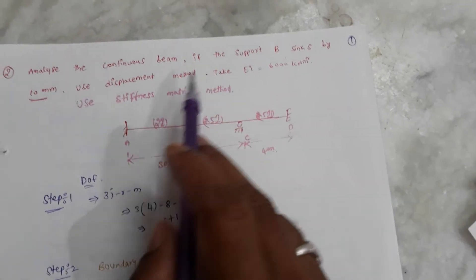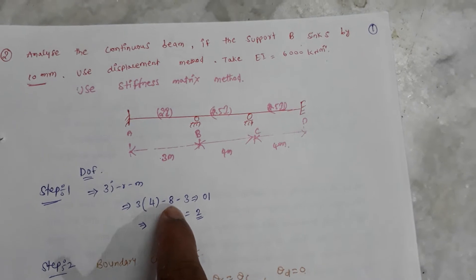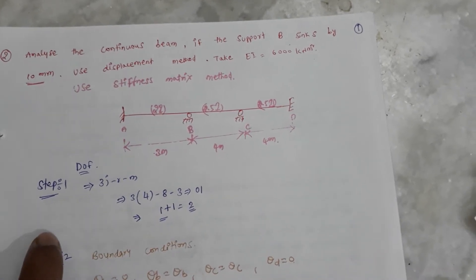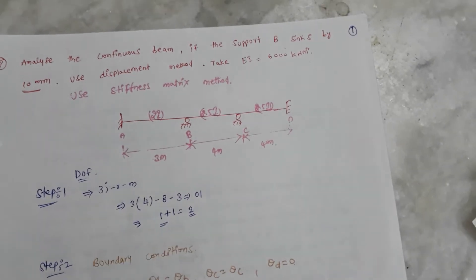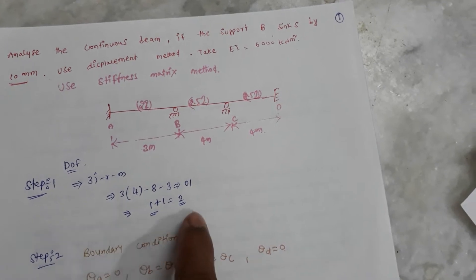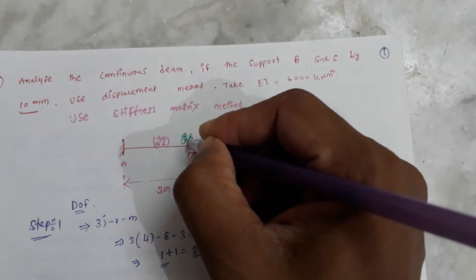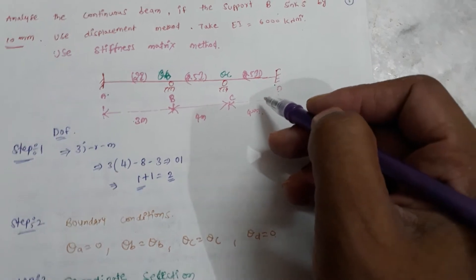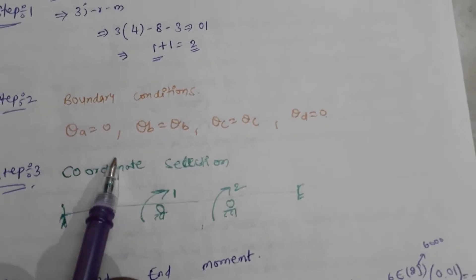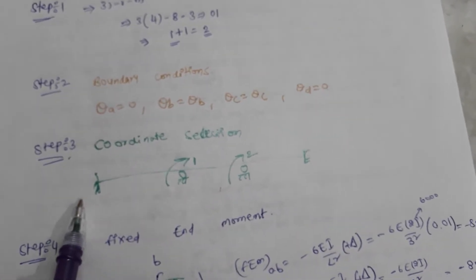Using the stiffness matrix method, we need to find the bending moment diagram. Before that, we need to find the degree of freedom. Since this is a displacement method, the unknowns are theta B and theta C. Boundary conditions: theta A equals zero (fixed support), theta D equals zero (fixed support), theta B and theta C are unknown.